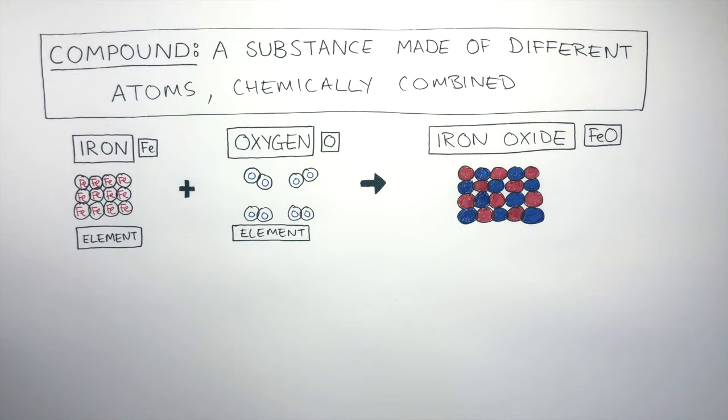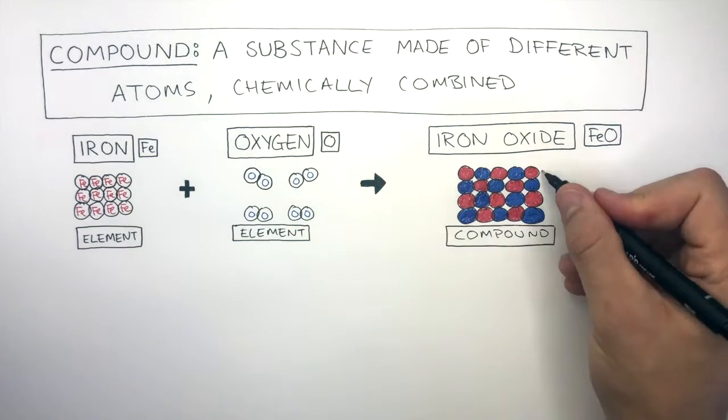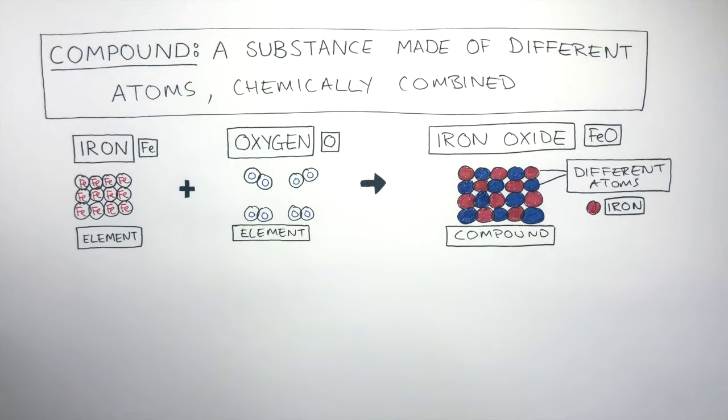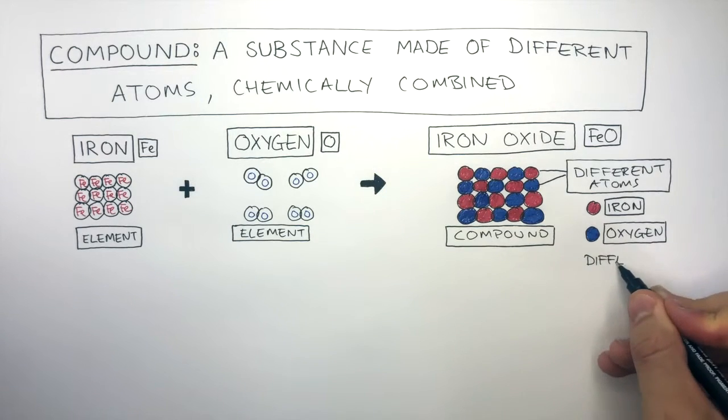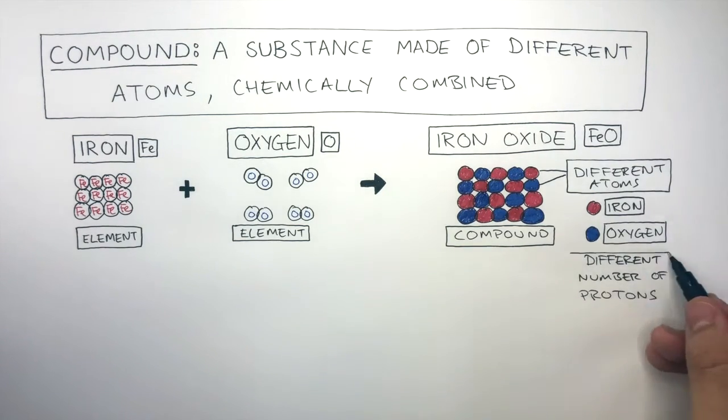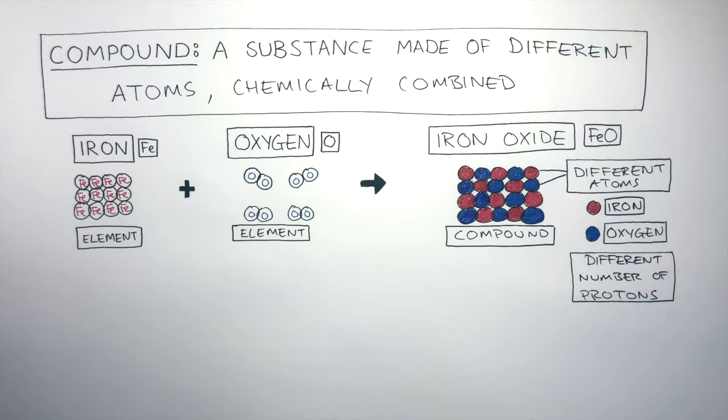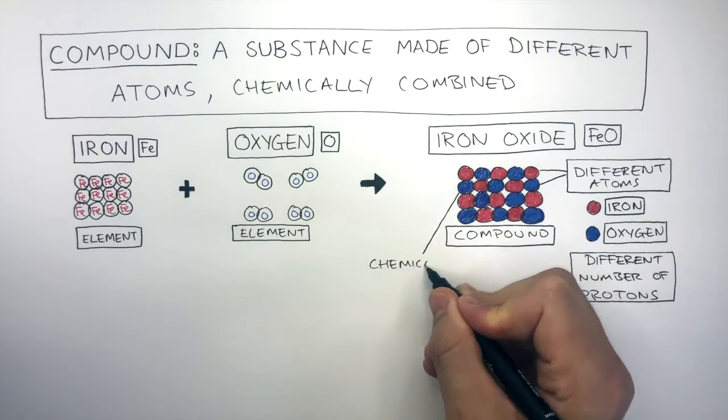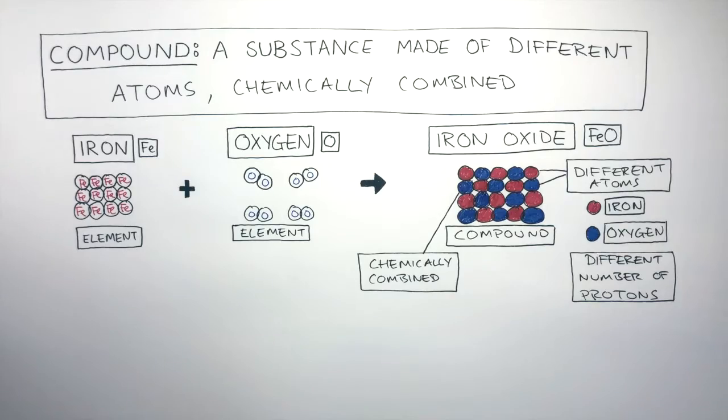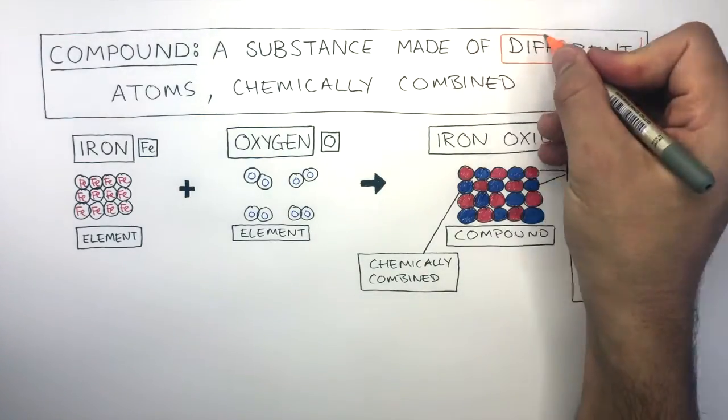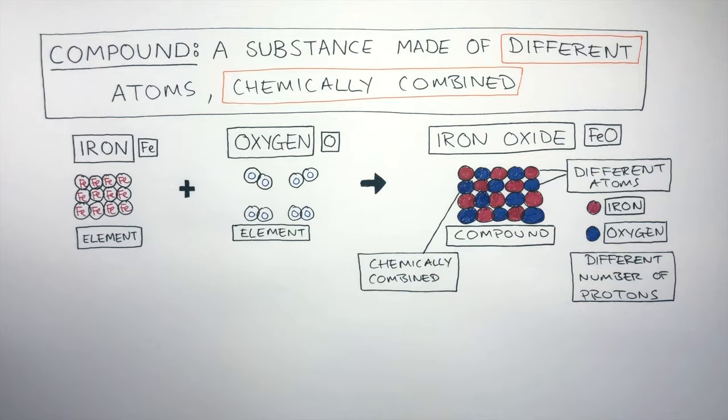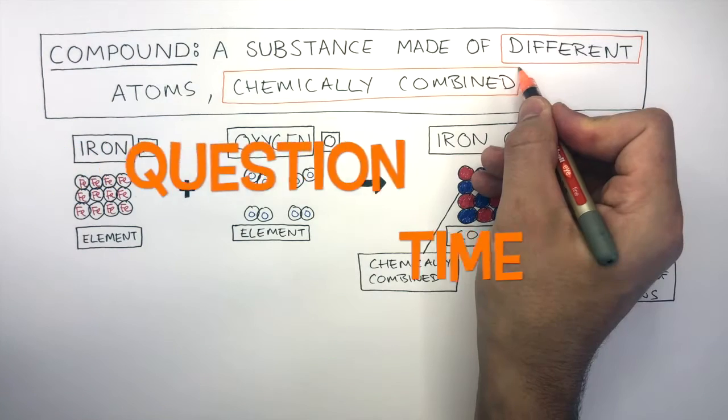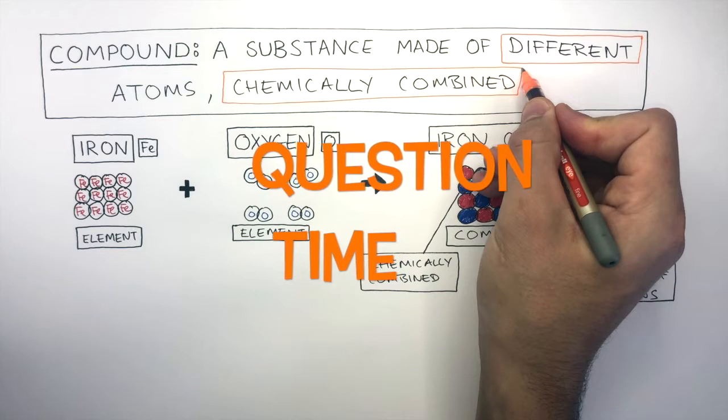This particle diagram shows how this is a compound because they have different atoms. The red circle represents iron atoms and the blue circle represents oxygen atoms. They are different atoms because they have a different number of protons. Also on top of this these atoms are chemically combined. So if a substance has different atoms which are chemically combined it is a compound. It's question time. Attempt these questions to check your understanding.